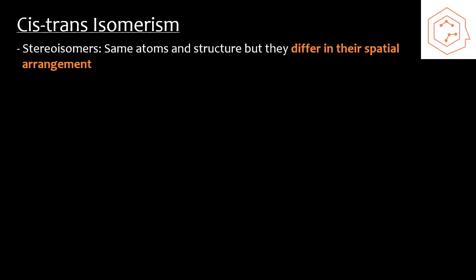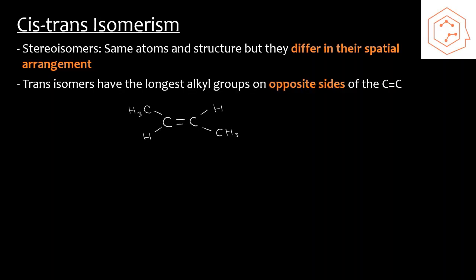Now we introduce a new type of isomer: cis and trans isomers, which arise when dealing with alkenes. Because there's a double bond, the atoms around those carbons cannot rotate freely as they could in an alkane. As a result, the position of each atom relative to the double bond remains fixed, allowing for stereoisomers — compounds with the same atoms and same structure as each other, but differing in spatial arrangement.